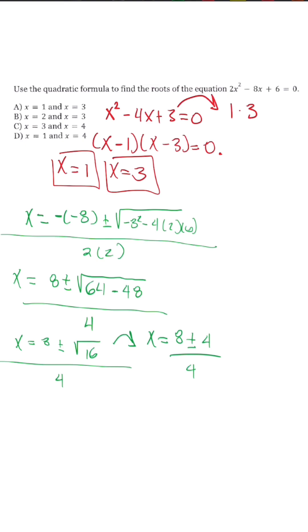So 8 plus 4 is 12, 12 divided by 4, x is equal to 3. First answer, we know that's correct. Second answer: 8 minus 4 is 4, 4 divided by 4, x is equal to positive 1.